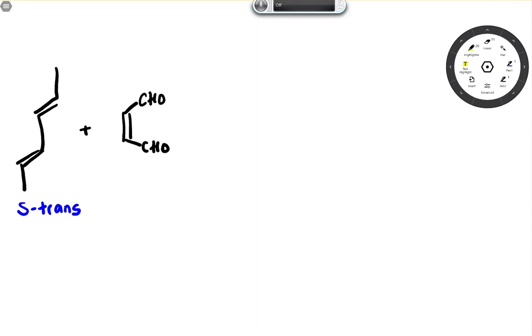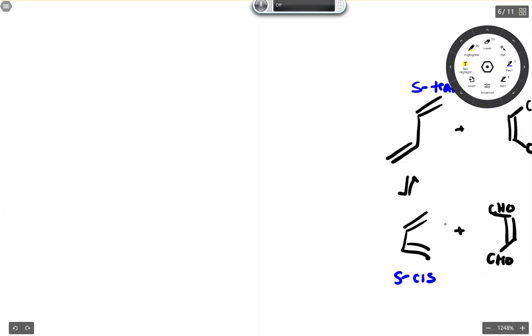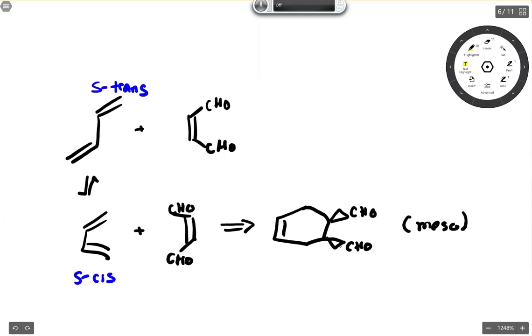I'd like to talk to you today about a Diels-Alder reaction in which the diene that's given to you is in the S-trans configuration. We know from our lecture that that's not the correct orientation of the diene.